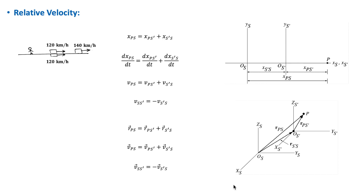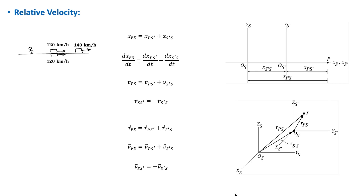If we attach a coordinate system to an observer together with an appropriate time scale, then he or she is said to be in a reference frame. When measuring quantities it is essential to specify the reference frame. In many situations, the surface of the earth is considered as the reference frame, so a stationary observer on earth serves as the reference frame.